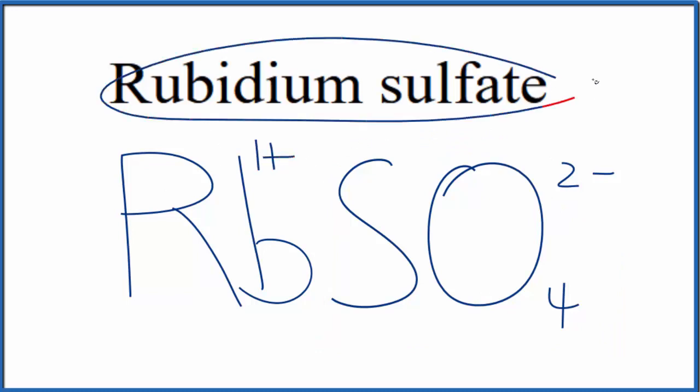This is a neutral compound, rubidium sulfate. It doesn't have the word ion after it. So we need to have these charges here balanced, give us a net charge of 0. If we had 2 of these rubidium ions, 2 times 1+, that's 2+, balances out the 2-.